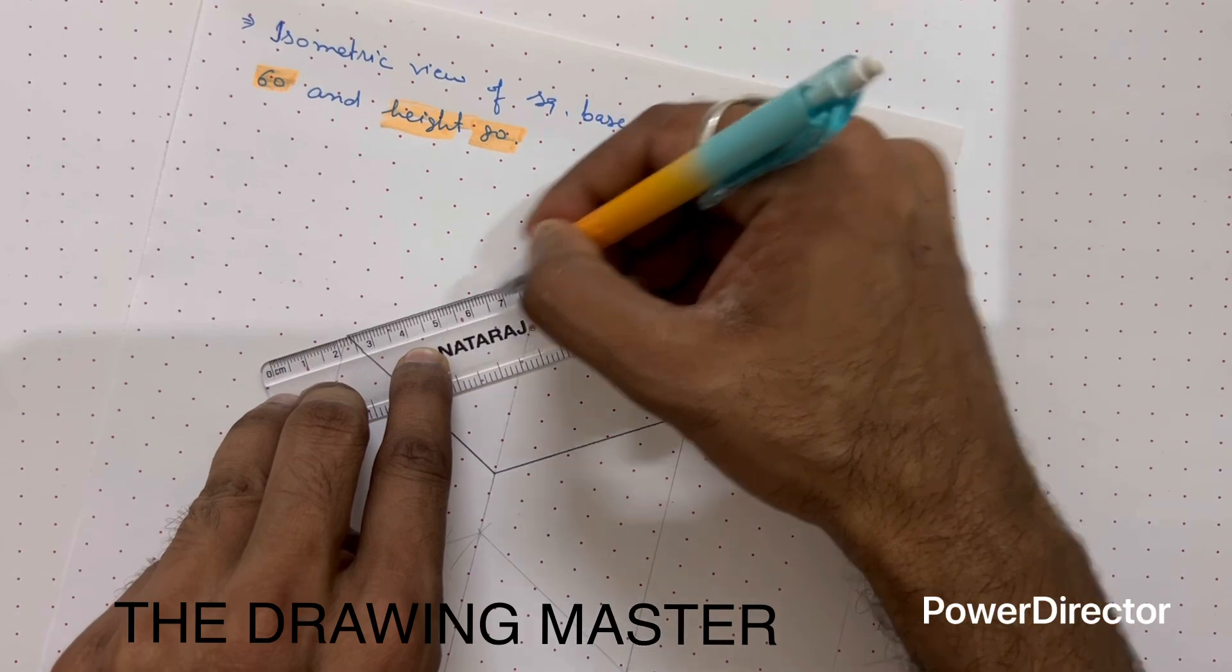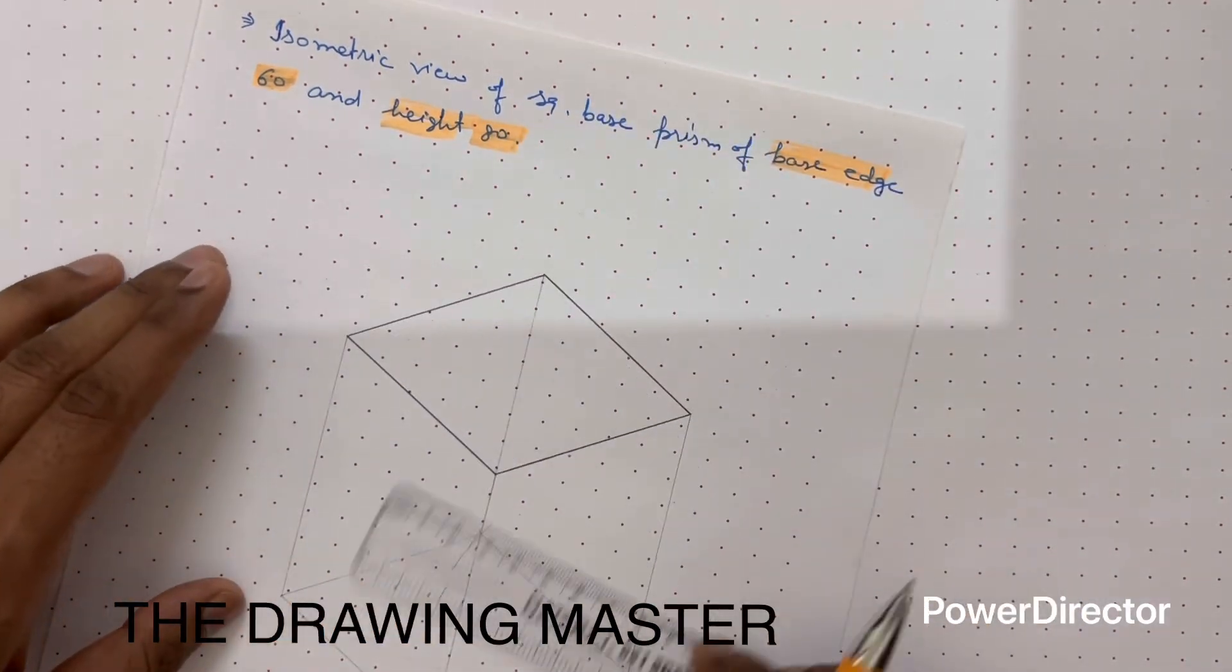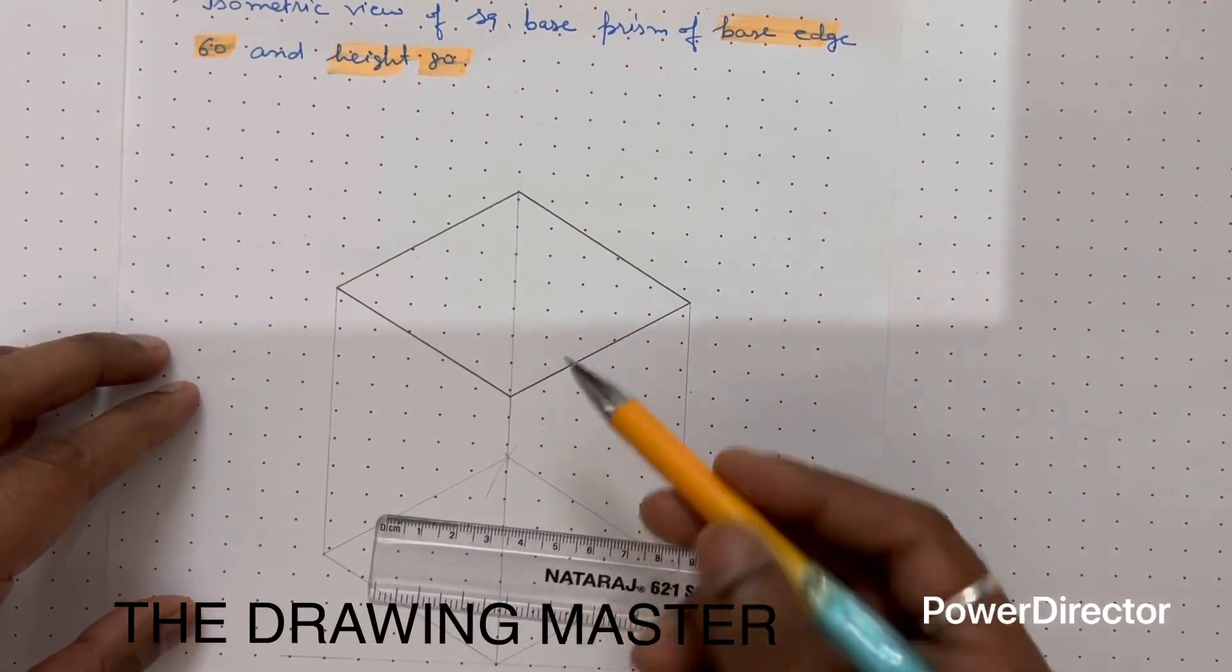Now we got the same rhombus, rhombus means to say isometric view of a square at the height of 80mm.